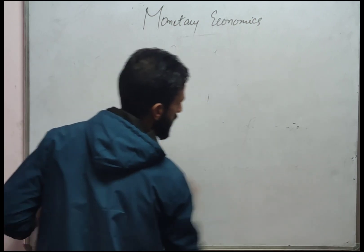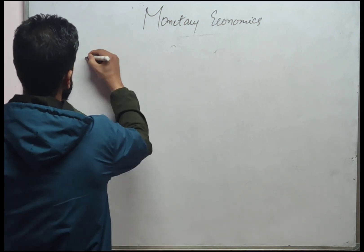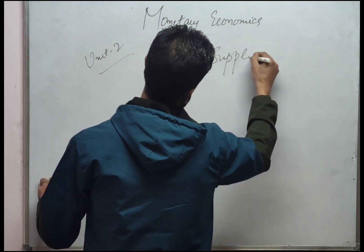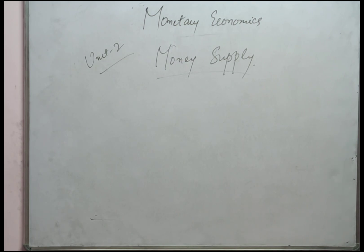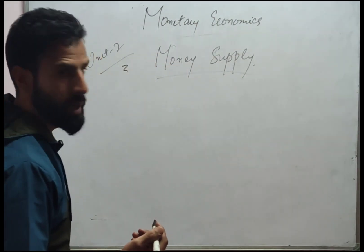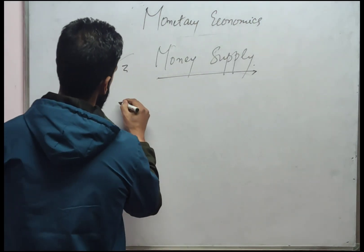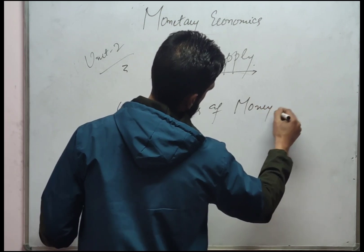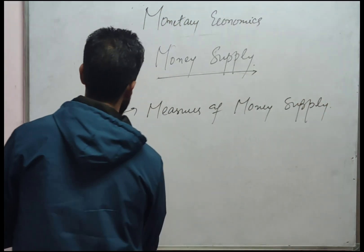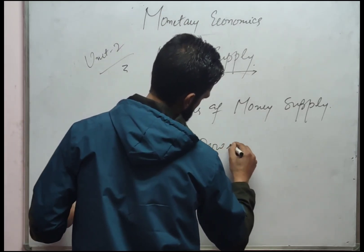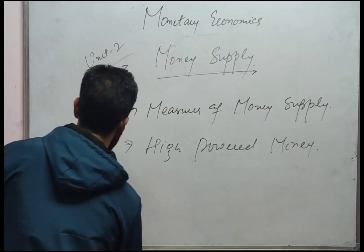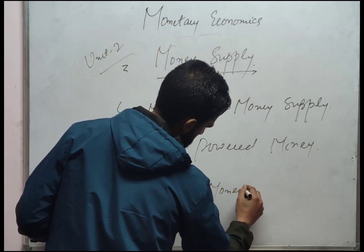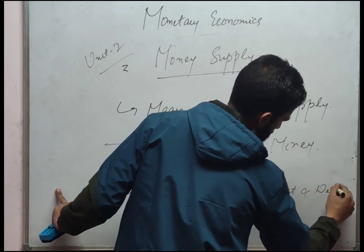Coming to Unit 2, the important topic is Money Supply. In this unit, the first question is measures of money supply. The second question is high-powered money. The last question is the definition of credit and deposit multiplier.